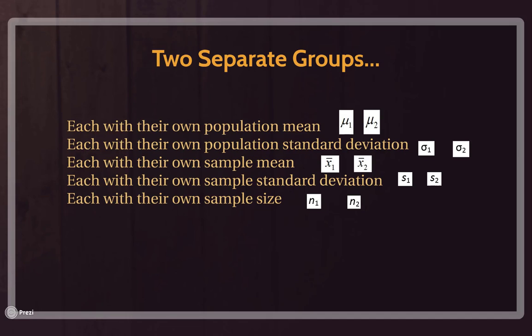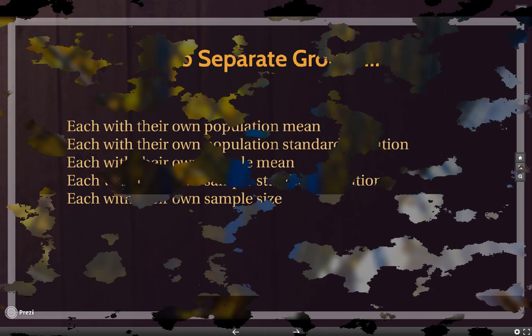Because they're separate, unique populations or groups, they'll have their own corresponding measurements. It's independent data because we wouldn't expect the two groups to affect each other. As we continue in this chapter, we'll talk about ways to graphically describe or compare two groups, and then we'll talk about the forms of inference for comparing these two groups through confidence intervals and hypothesis testing.